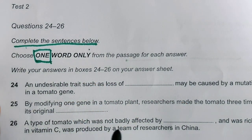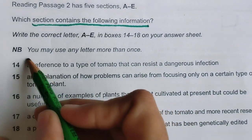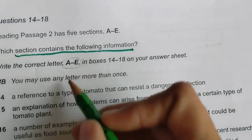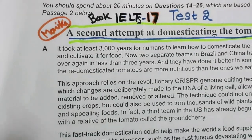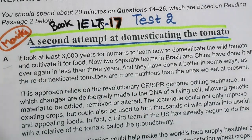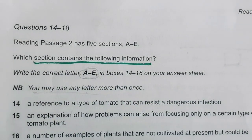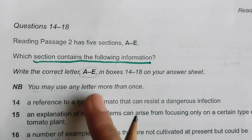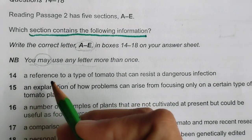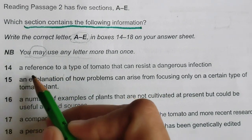I will be doing it right from the first type of question. For 'which section contains the following information,' these are the pieces of information and we have to select the letters A to E. If we find any information from a paragraph, we write that letter as the answer. One thing is also given: 'you may use any letter more than once,' meaning any paragraph letter may come twice, though it is not compulsory.